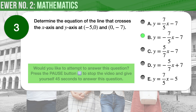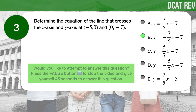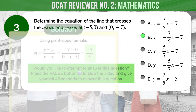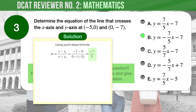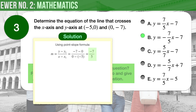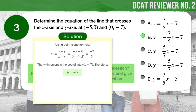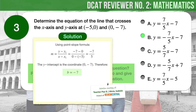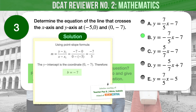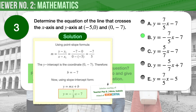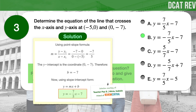The correct answer is B: y equals negative 7 over 5 times x, minus 7. Whenever you encounter a math problem asking for the equation of a line given two or more points, the first step is always to find the slope. Using the point-slope form, we solve for slope m and arrive at m equals negative 7 over 5. The y-intercept is the coordinate (0, negative 7), so b equals negative 7. Plugging in the values of slope m and y-intercept b into the slope-intercept form, we arrive at: y equals negative 7 over 5 times x, minus 7.